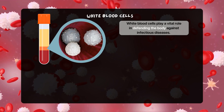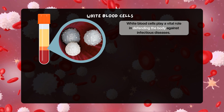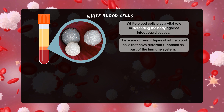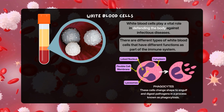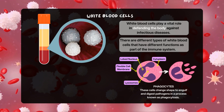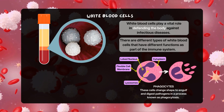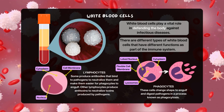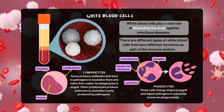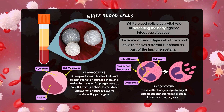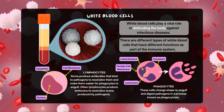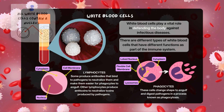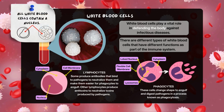White blood cells play a vital role in defending the body against infectious diseases. There are different types of white blood cells that have different functions as part of the immune system. One example is phagocytes. These cells change shape to engulf and digest pathogens in a process known as phagocytosis. There are also lymphocytes. Some lymphocytes produce antibodies that bind to pathogens to neutralize them and make them easier for phagocytes to engulf. Other lymphocytes produce antitoxins to neutralize toxins produced by pathogens. As a key point, all white blood cells contain a nucleus.